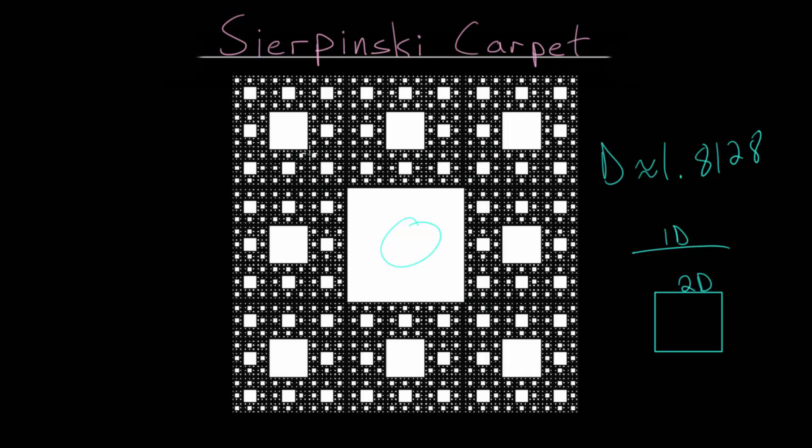And you can imagine, it's because we're always removing one small portion of the overall square. In fact, we will have eight ninths of the entire shape remaining after each step is carried out.